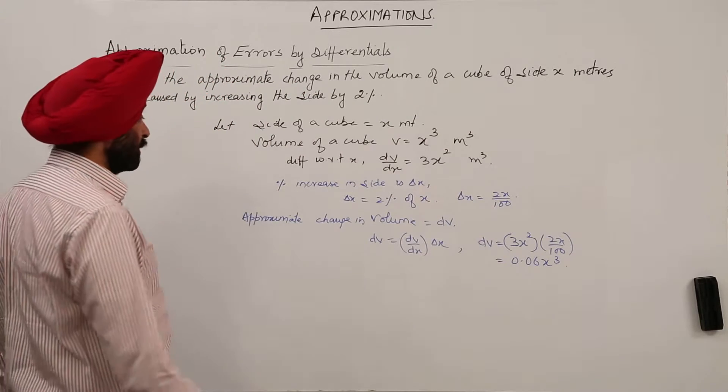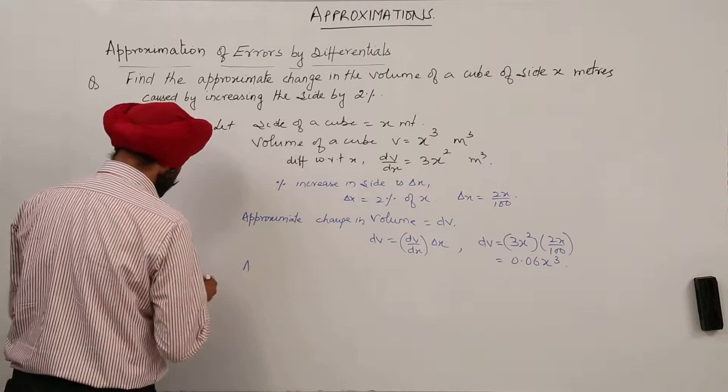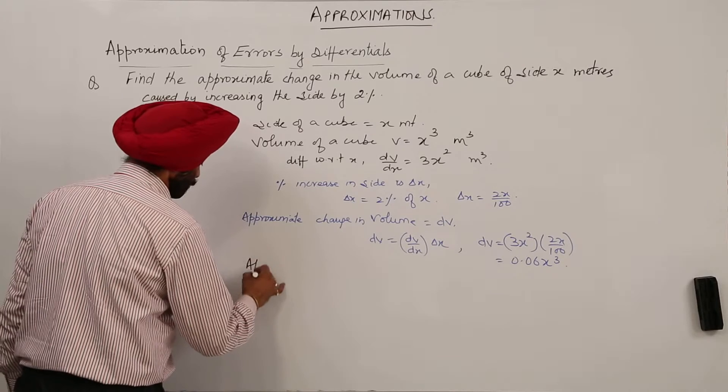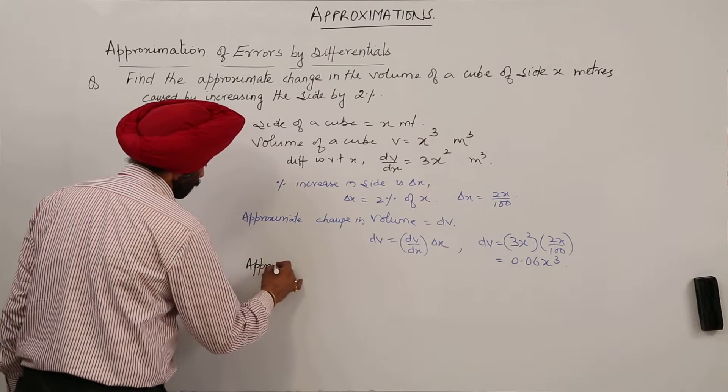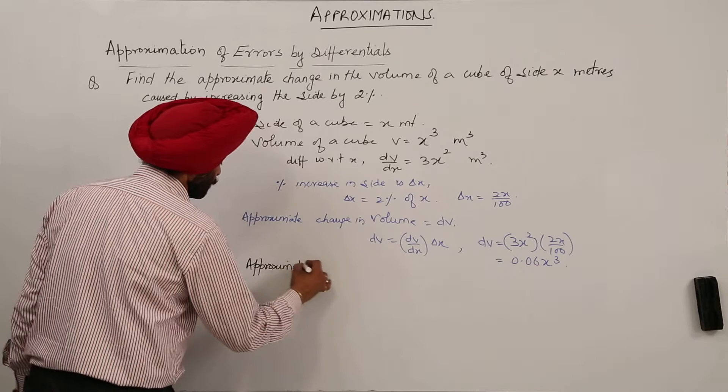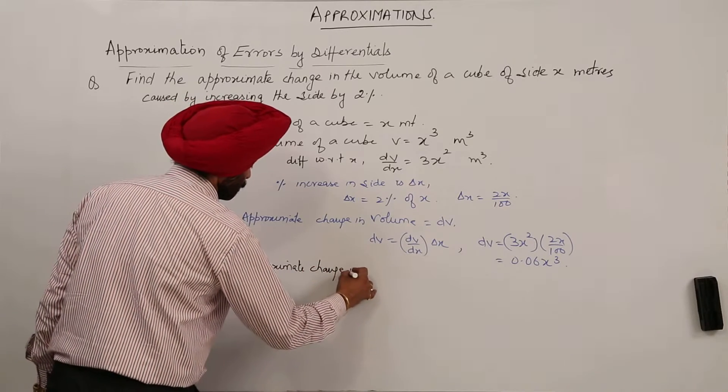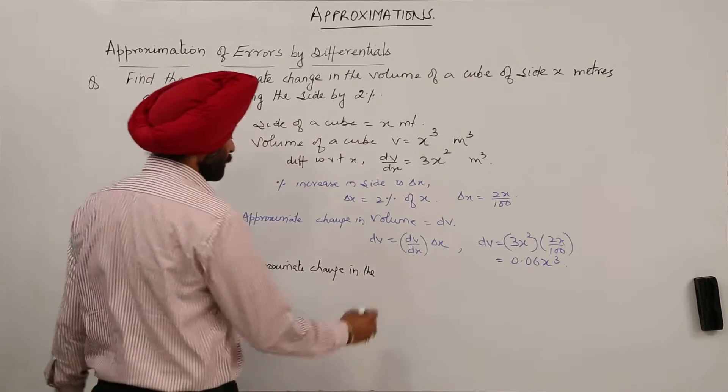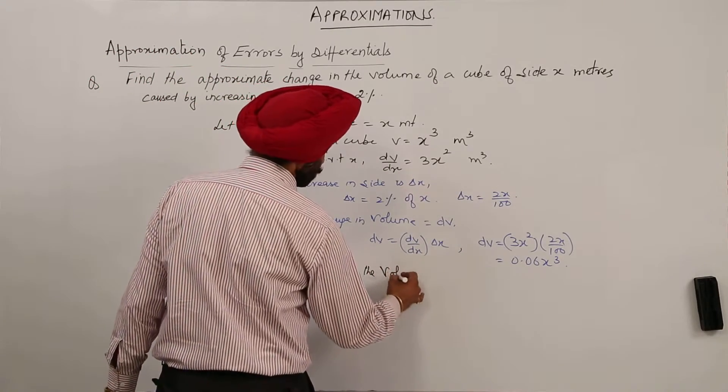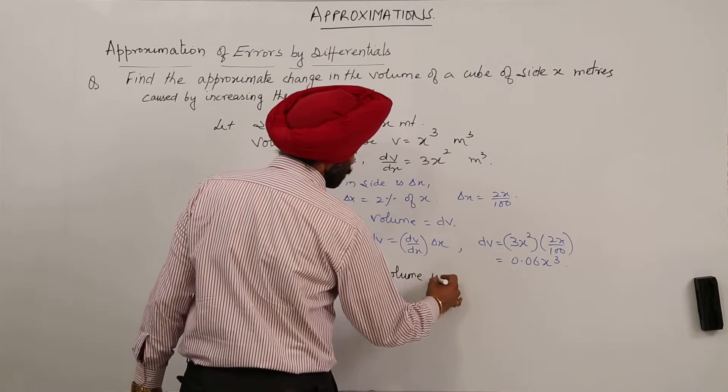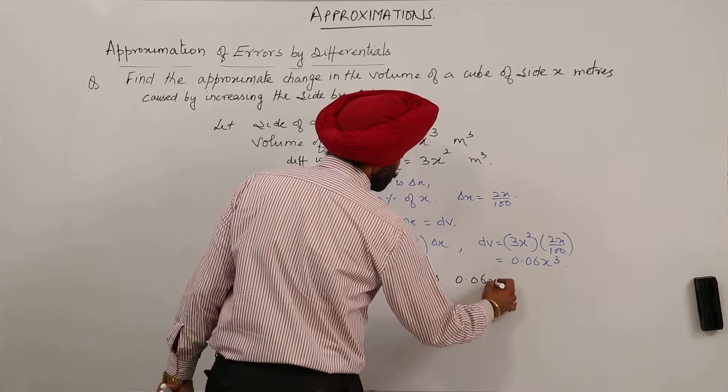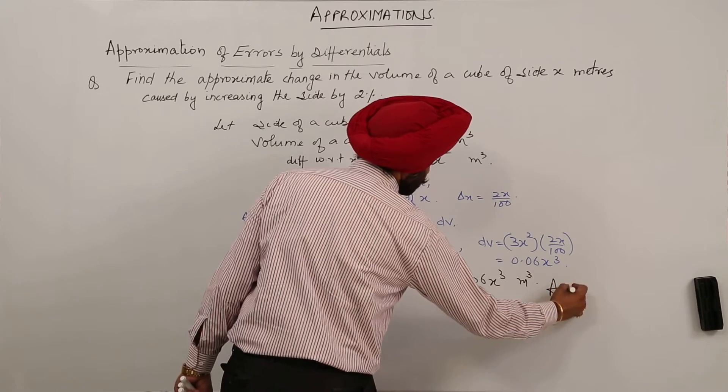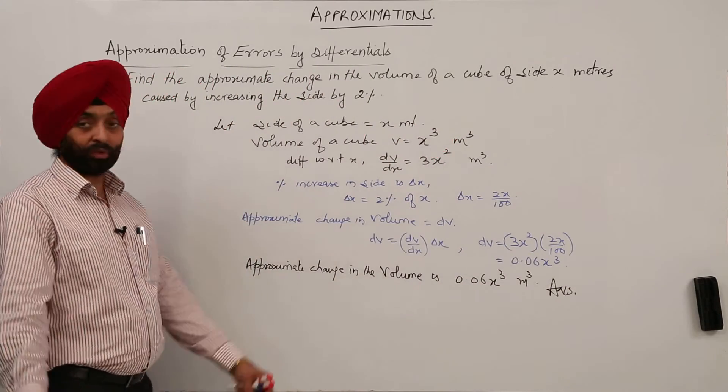So, approximate change in the volume is 0.06 x cube meter cube. This is the answer. Okay, simple question.